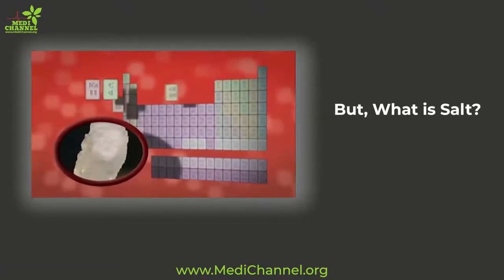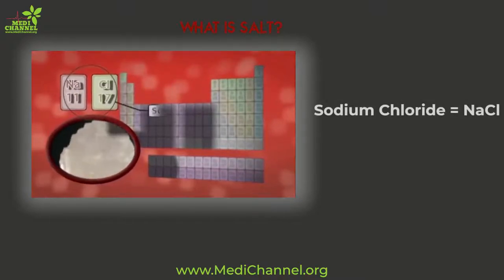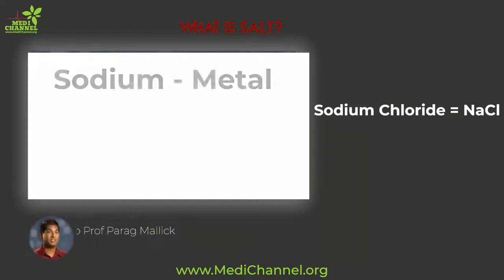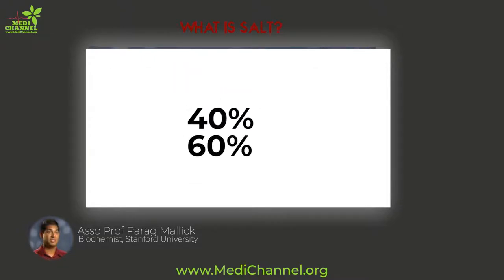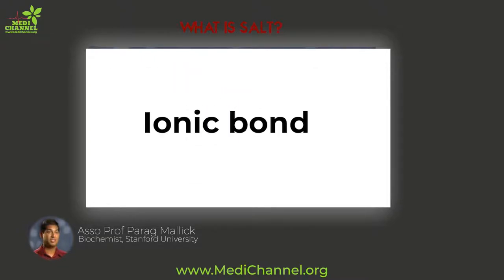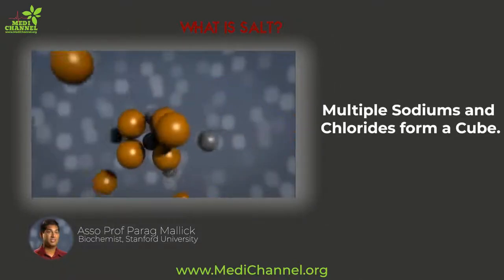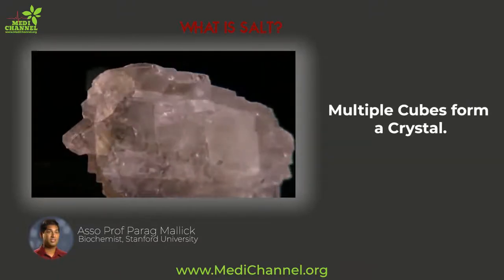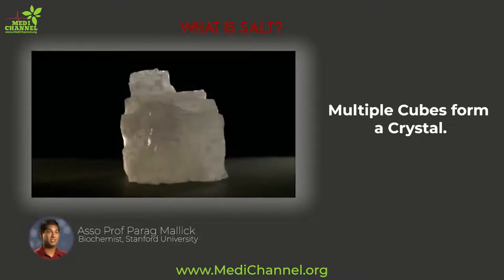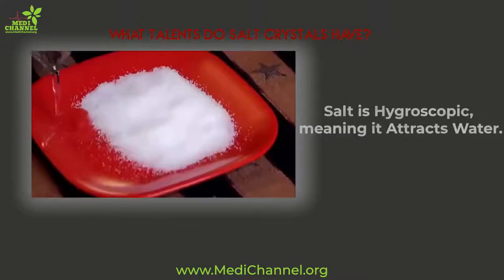While there is a technical chemical definition of salt, what we'll be talking about is the ever-present compound sodium chloride. The sodium is a metal, the chloride a halogen, and the ratio is about 40% sodium and 60% chloride. They come together and form an ionic bond. When multiple sodiums and chlorides come together they form a cube, and when multiple cubes come together they form a crystal, as we're accustomed to seeing in nature.